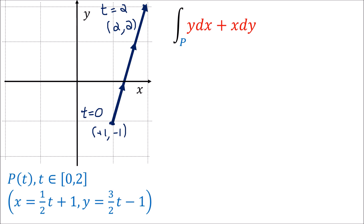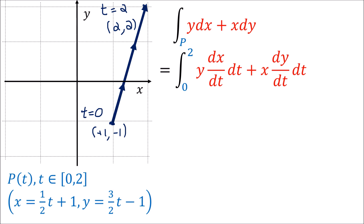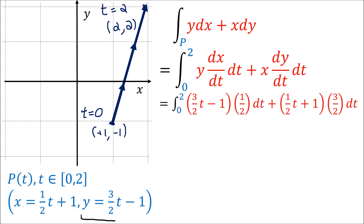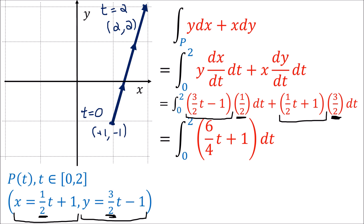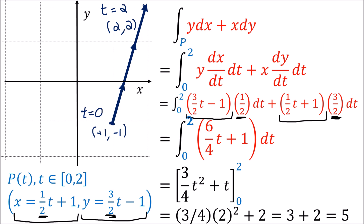The normal way to compute this is to expand the differentials dx and dy in terms of dt, using dx equals (dx/dt)·dt and dy equals (dy/dt)·dt. We can grab y from the path equation, and the derivative of x with respect to t is one-half. We can grab x from the path, and dy/dt is three-halves. Adding these two terms together, we get the integral of (6/4)t plus 1 dt. Computing the antiderivative gives three-quarters t squared plus t, evaluated at 0 and 2. Evaluating at 2 gives three-quarters times 4 plus 2, which is 3 plus 2, equal to 5.